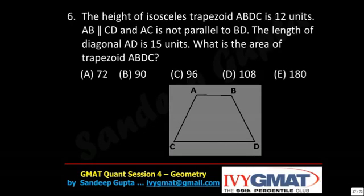Let's see what this question is saying — height of an isosceles trapezoid. An isosceles trapezoid, or trapezium as it's called in some countries, has two identical sides — that's the meaning of isosceles. AB is parallel to CD, AC is not parallel to BD, and the diagonal AD is 15. What is the area of the trapezoid?